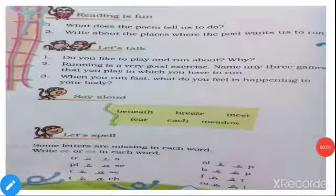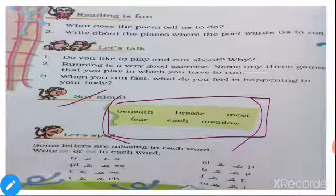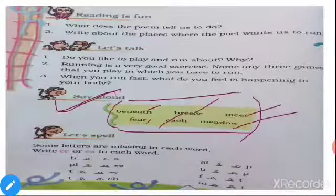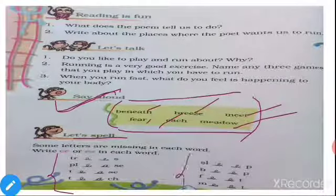Next, 'Say Hello'. You have to pronounce these words loudly. Can you see this yellow box? Yes, you have to pronounce these words: Beneath, Breeze, Meet, Fear, Each, Meadow. You have to pronounce them like this.